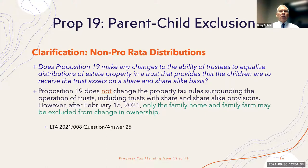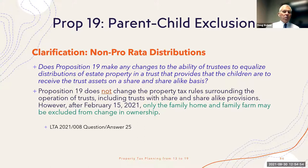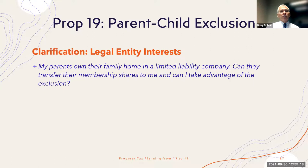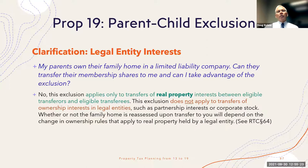The personal representative acquires a loan on the property, uses the cash from that refinancing, transfers cash to Child A who wants the cash, and transfers the residence subject to the mortgage to Child B who wants to reside there. That strategy is still available under Proposition 19. The question is whether there's any impact on legal entity interests — there is no change. The parent-child exclusion for family farms and homes applies only to a transfer of actual real property, not to an entity interest.